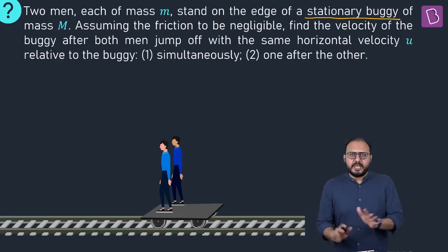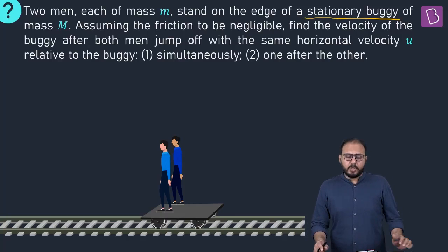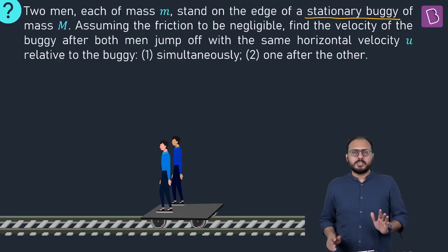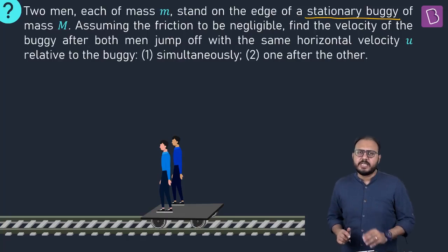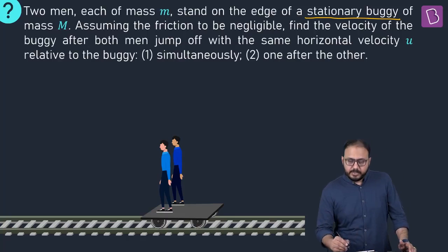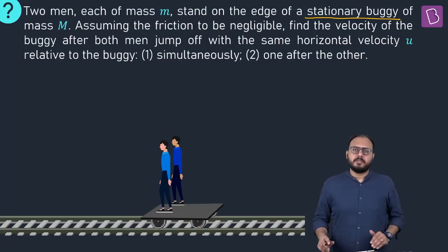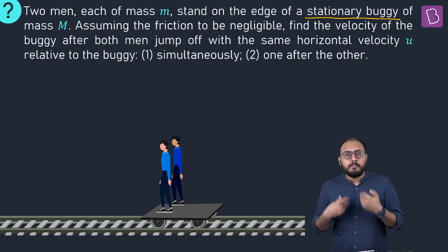Assuming the friction to be negligible, no friction. Find the velocity of the buggy after both men jump off. With the same horizontal velocity u relative to the buggy. Muzzle velocity is u. Same question, two cases. What if they jump simultaneously and what if they jump one after another?